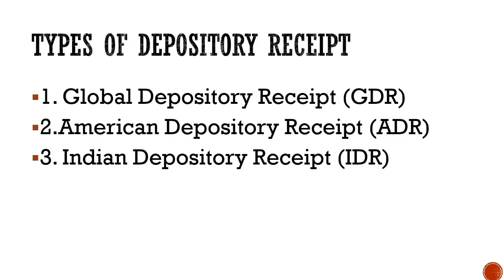The next thing we need to learn is the various types of depository receipts. Broadly speaking, there are three types: number one, the Global Depository Receipt (GDR); second, the American Depository Receipt (ADR); and third, the Indian Depository Receipt (IDR). A GDR is a depository receipt whereby an Indian company raises fund from outside the country. An ADR is where the Indian company raises funds only from the United States of America.